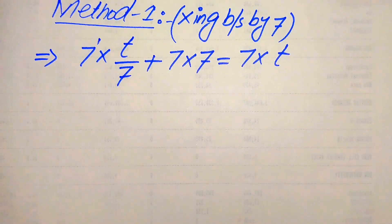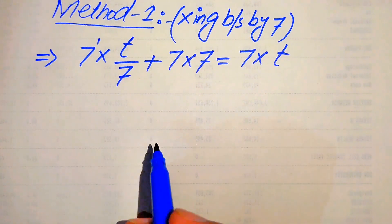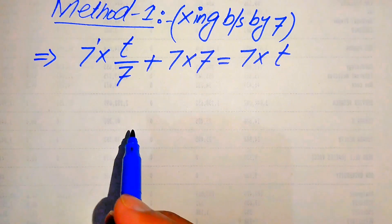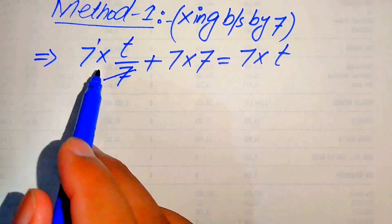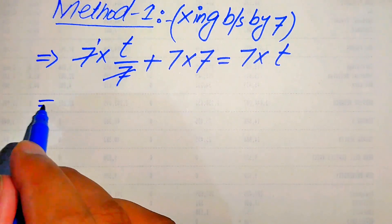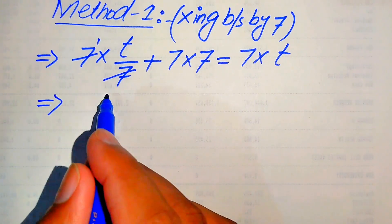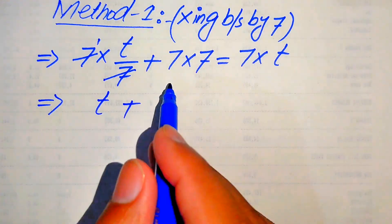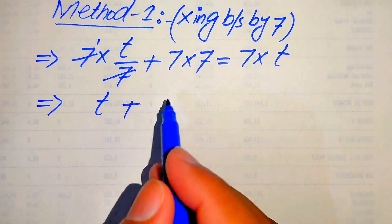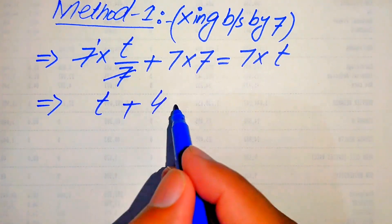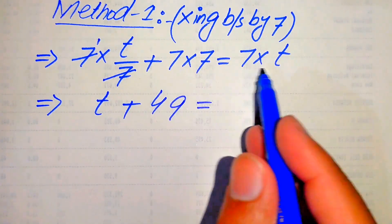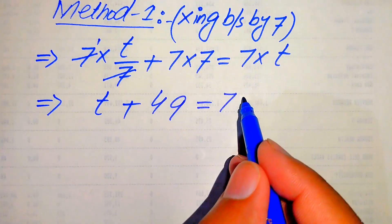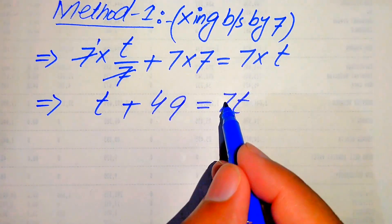In the next step, this 7 is cancelled out by this 7, and we get t plus 7 times 7 which becomes 49, equals 7 times t, which is 7t.